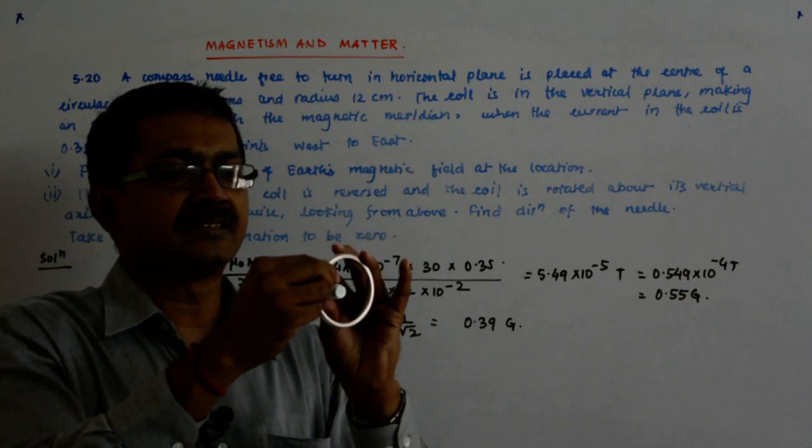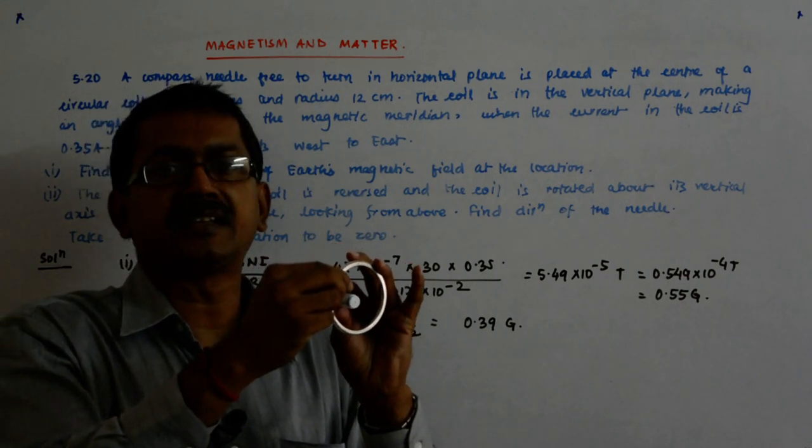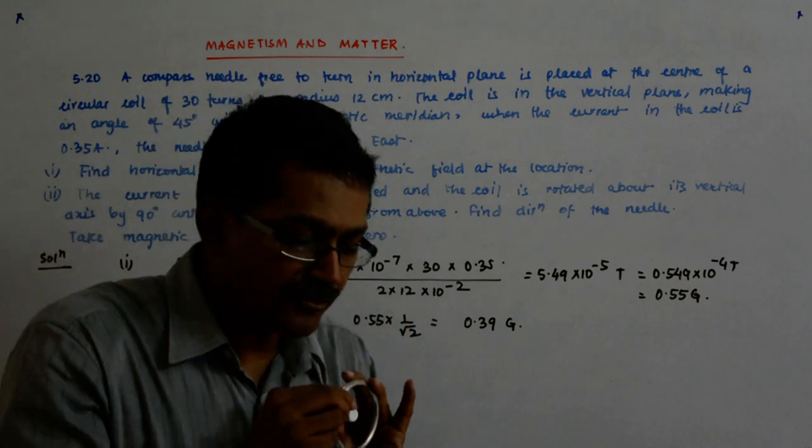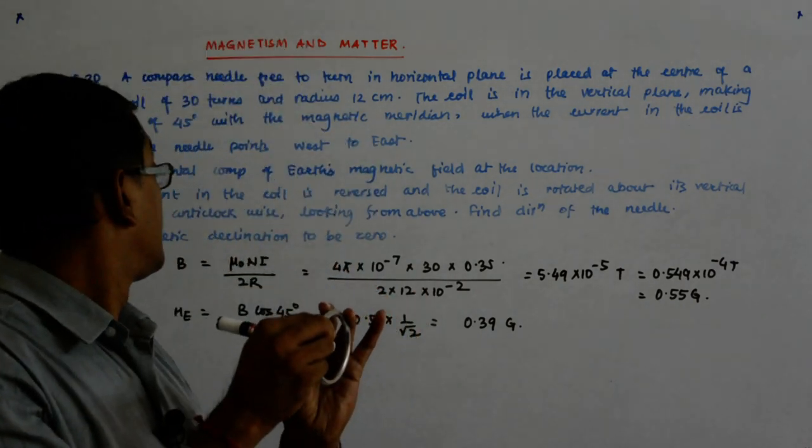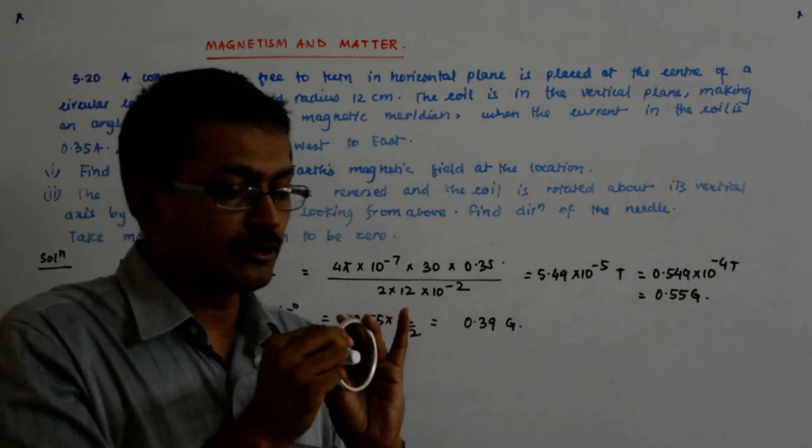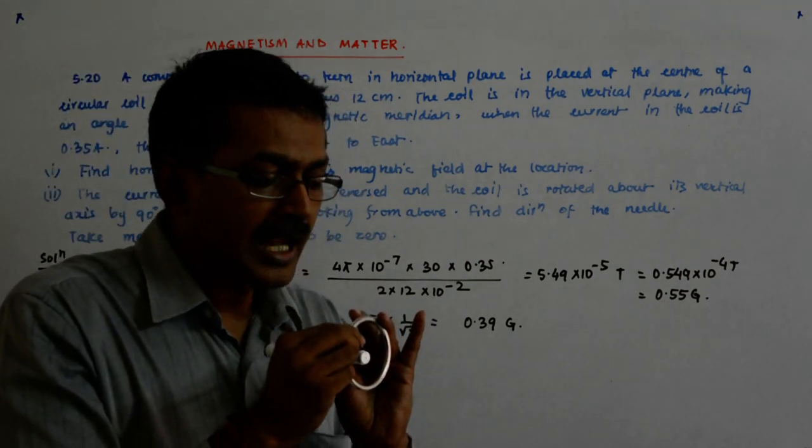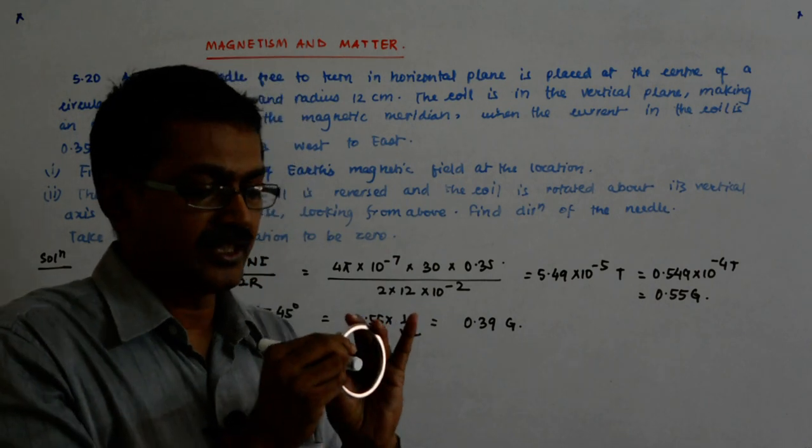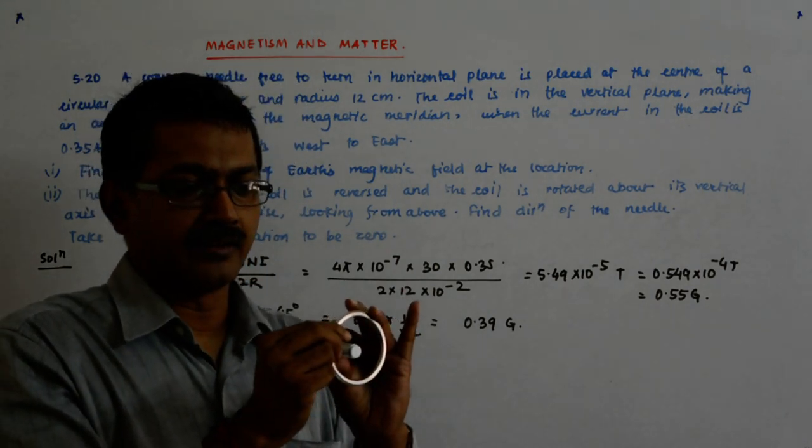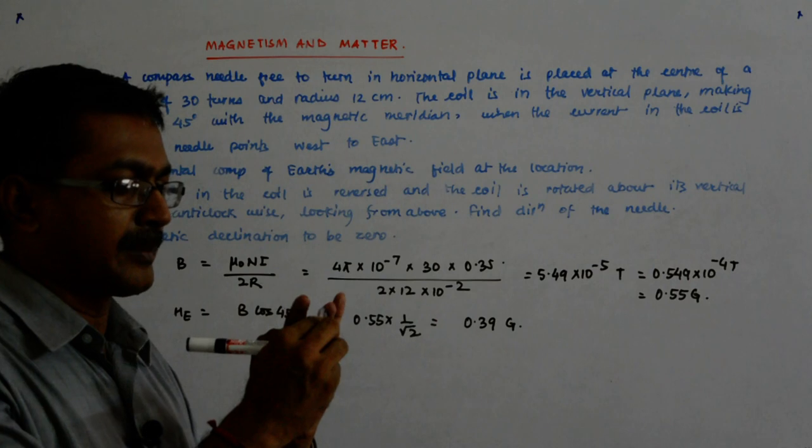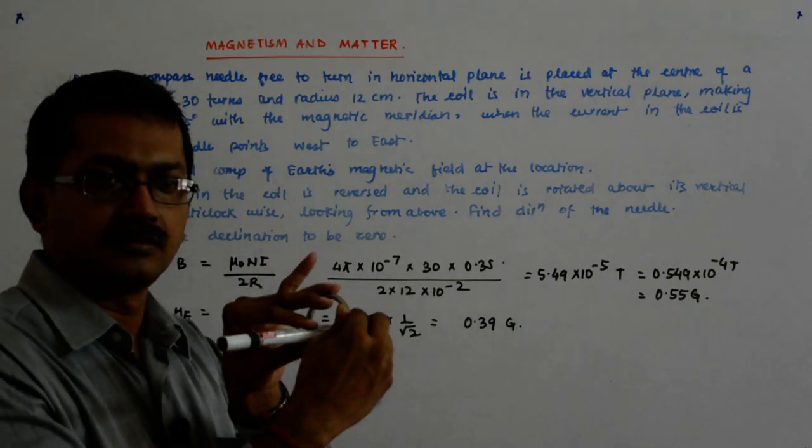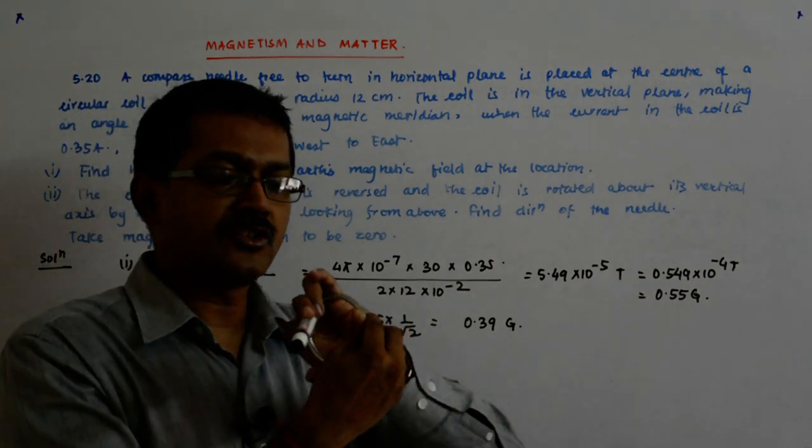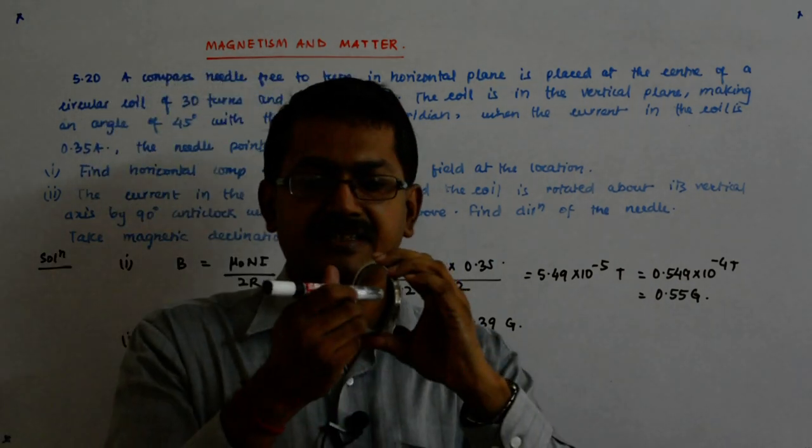They say that this is shifted by 90 degrees looking from above in anti-clockwise. So looking from here, anti-clockwise will be - see this is making an angle of 45 degrees here. So I move 45 degrees, it becomes horizontal. I move another 45 degrees, it becomes like that. You understand? So now it is making an angle of 45 degrees like this.